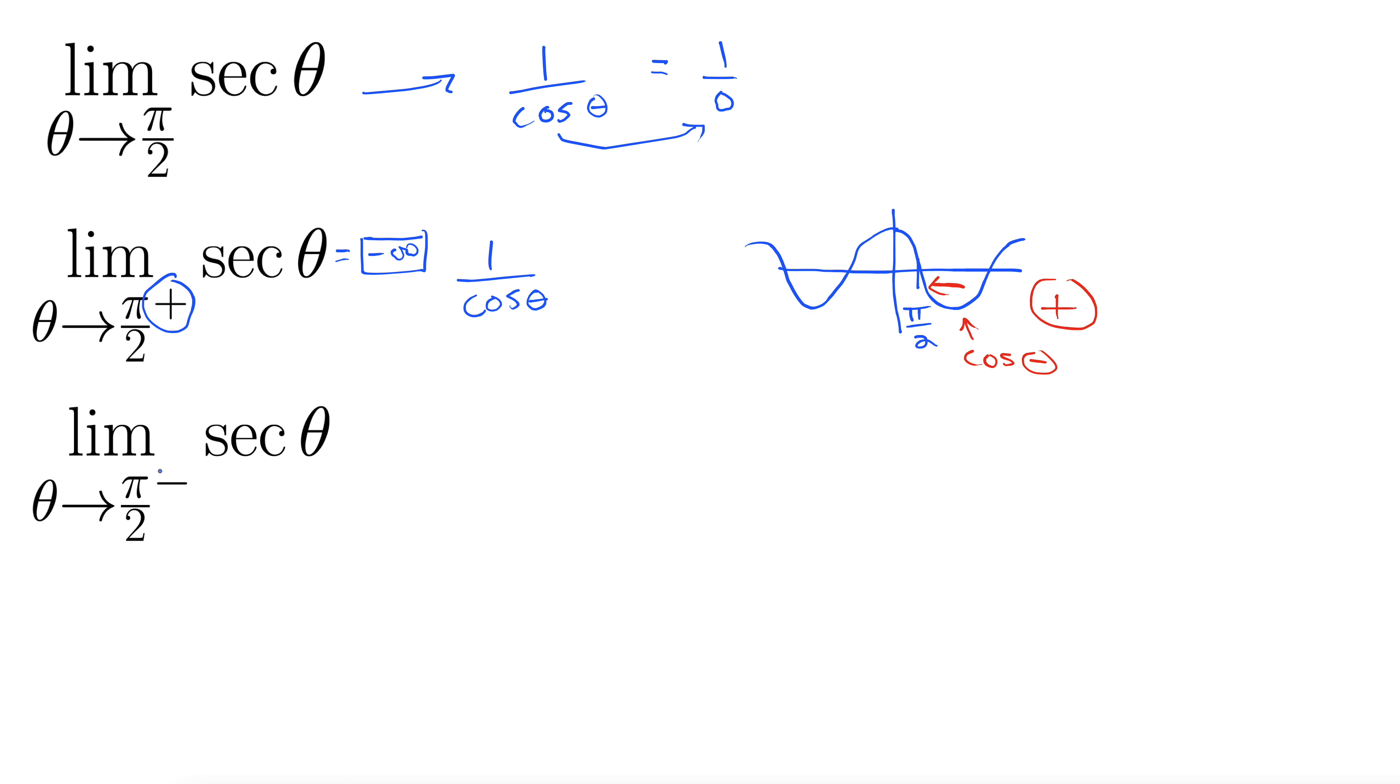Let's see what happens as we approach from the negative direction. So now we're coming in from the negative direction, which is from the left, and we come in here towards π/2 from the left. Now note up here, as we're approaching from the left, cos theta is positive. So this is going to be positive infinity.